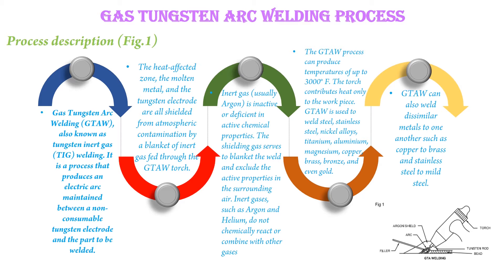Process description, as shown in Figure 1. Gas Tungsten Arc Welding, also known as Tungsten Inert Gas welding, is a process that produces an electric arc maintained between a non-consumable tungsten electrode and the part to be welded. The heat affected zone, the molten metal, and the tungsten electrode are all shielded from atmospheric contamination by a blanket of inert gas fed through the GTAW torch.